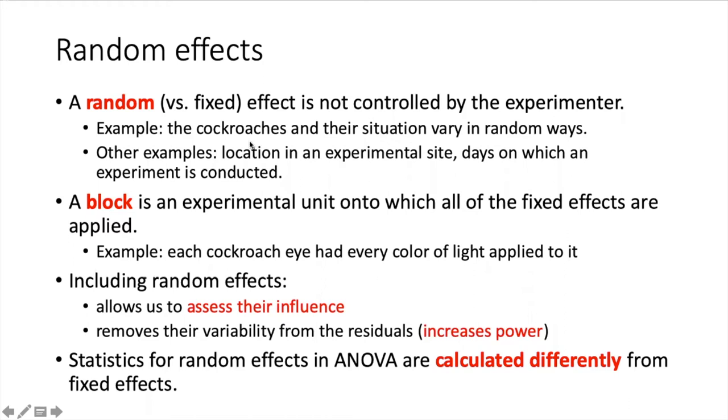In the experiment that we are working on, each individual cockroach and the implantation of the electrode, the distance of the LED from their eye, all of these are likely to randomly vary from each other in a way that we cannot control. And so some of the variance that we're seeing in the results is due to the differences among the different cockroaches, the implantations, and their LEDs.